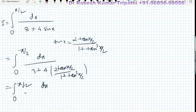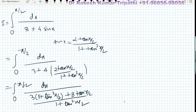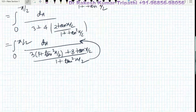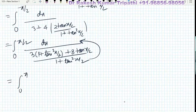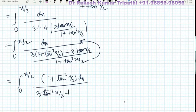Taking the LCM, the denominator becomes 3(1 + tan²(x/2)) + 8tan(x/2), all over (1 + tan²(x/2)). The factor (1 + tan²(x/2)) in the denominator transfers to the numerator and multiplies with dx. So the integral becomes the integral from 0 to π/2 of (1 + tan²(x/2)) dx over (3tan²(x/2) + 3 + 8tan(x/2)).